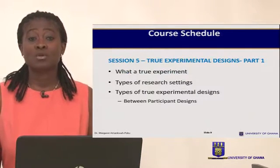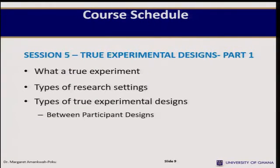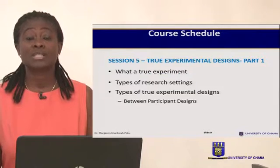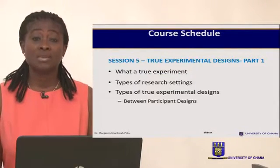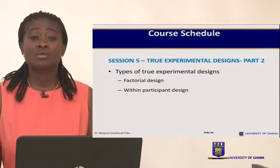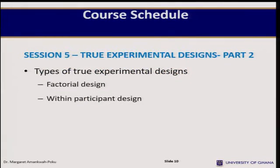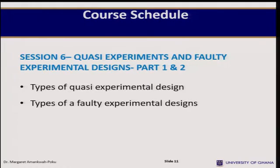In Session 5, I'll talk about true experimental designs. I'll define what the true experiment is, discuss the types of research settings available to psychologists, and cover types of true experimental designs. I'll begin with the between-participant design, then move on to the factorial design in part two of Session 5, and also discuss the within-participant design.